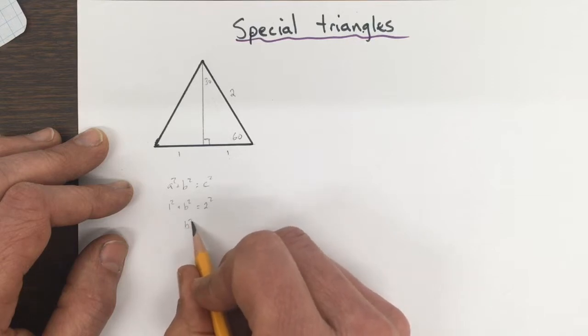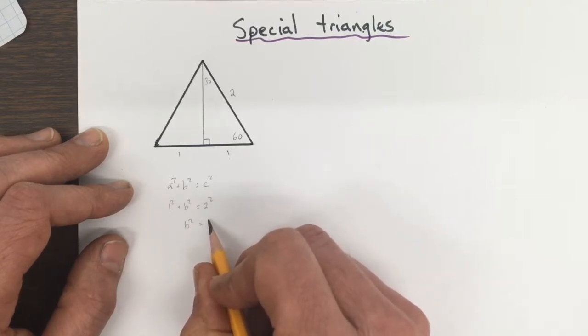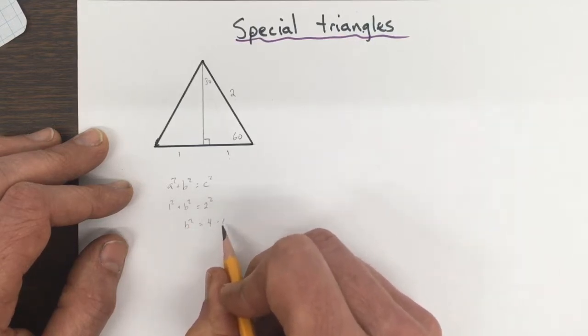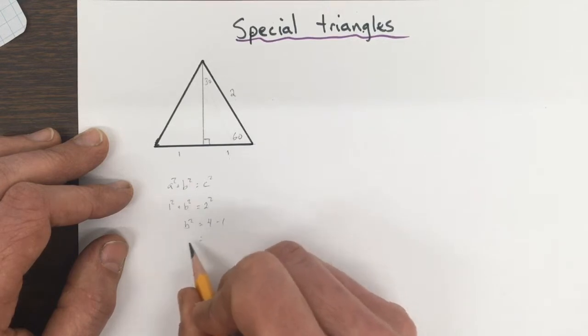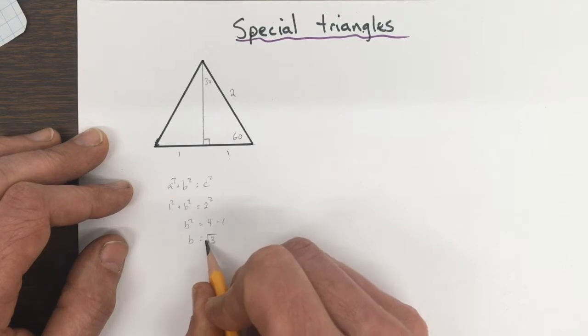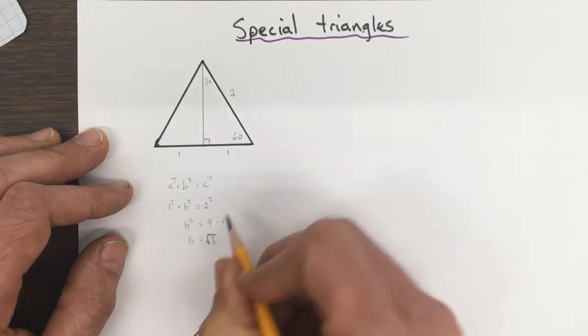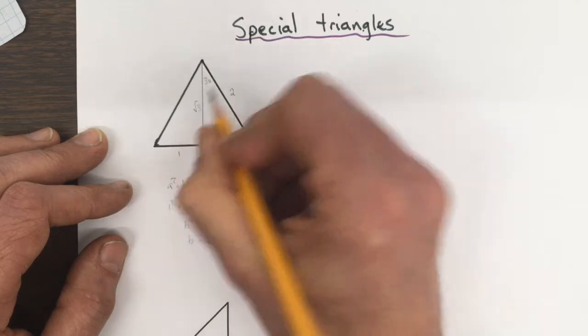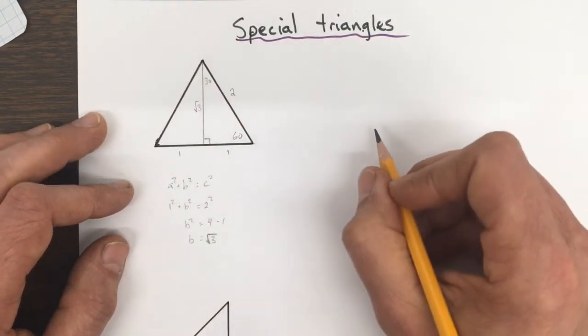We have b squared equals 4 minus 1, and so b is the root of 3. So that height is the root of 3. Now we can do the trig ratios.